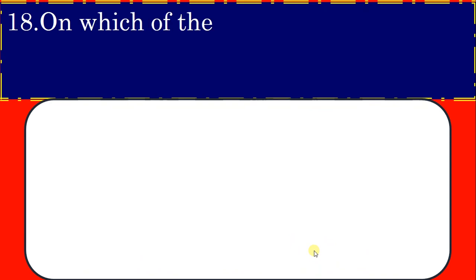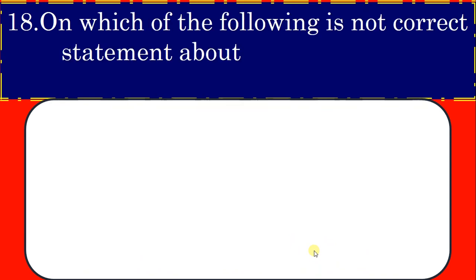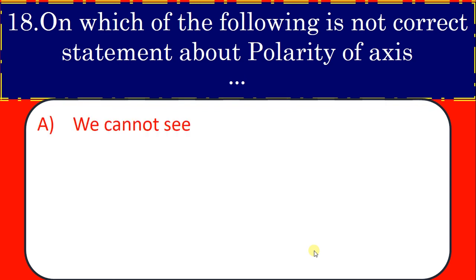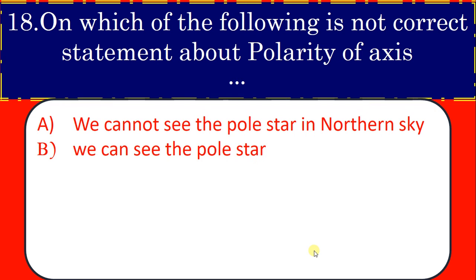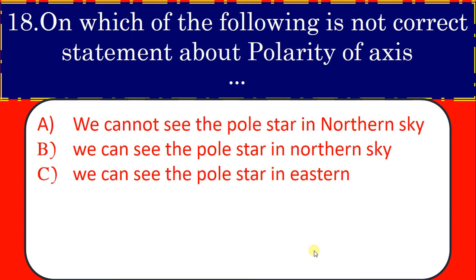And which of the following is not correct statement about polaris of axis? We cannot see the pole star in northern sky. We can see the pole star in northern sky. We cannot see the pole star in eastern hemisphere.